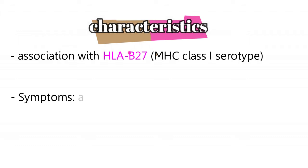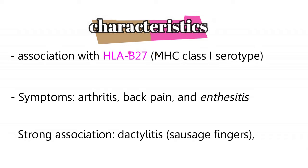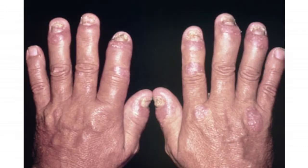The common characteristic symptoms for these diseases are arthritis, back pain, and enthesitis — which is basically inflammation of tendon insertions. It's also important to know that the back pain starts as morning stiffness and gets better as the day goes on. They are strongly associated with dactylitis, also known as sausage fingers, and uveitis. Here is the sausage finger appearance.